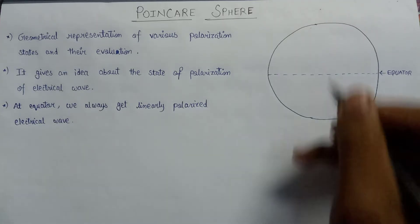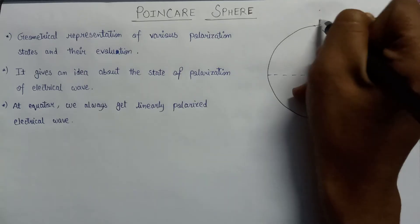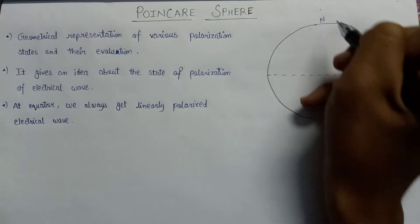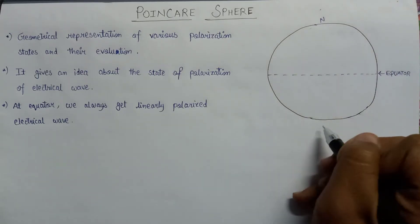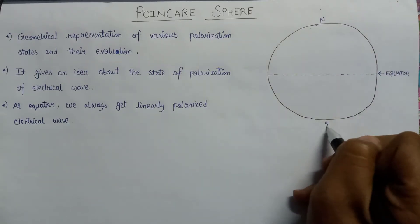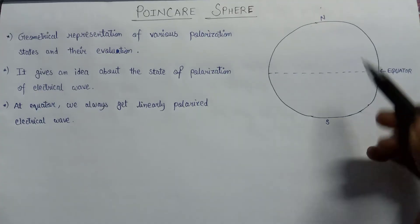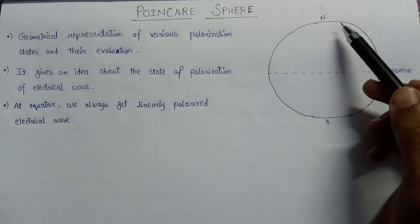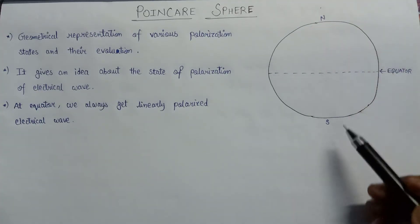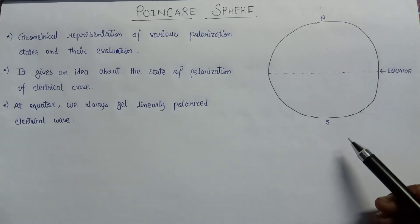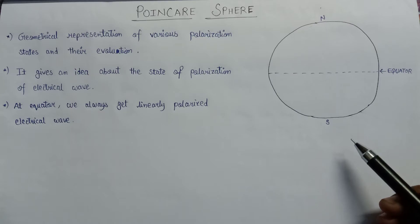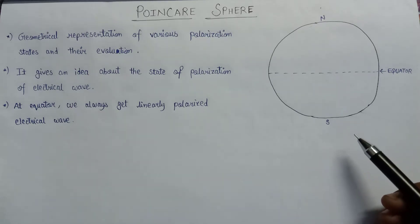This is the north pole of the Poincaré Sphere and this is the south pole of the Poincaré Sphere. At both the north pole and the south pole we will always get a circularly polarized electric wave.